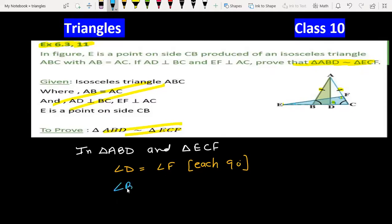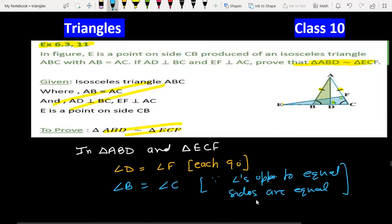The reason is angles opposite to equal sides are equal. When two sides are equal, the opposite angles are equal. In the question, AB = AC, so angle B = angle C.